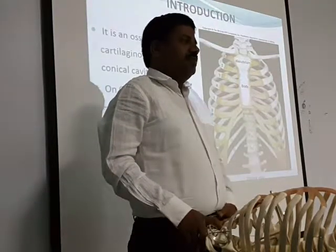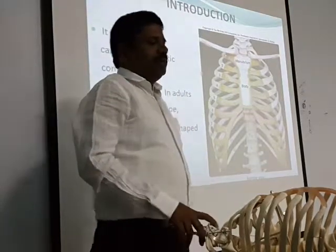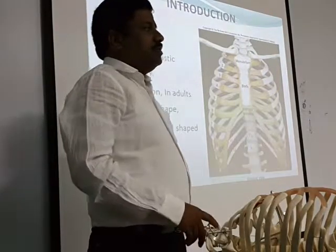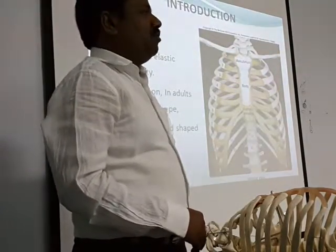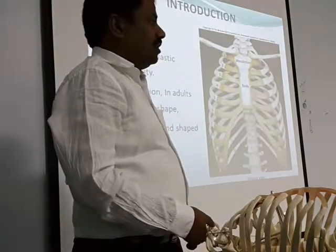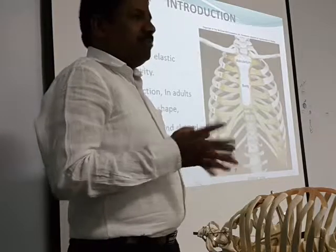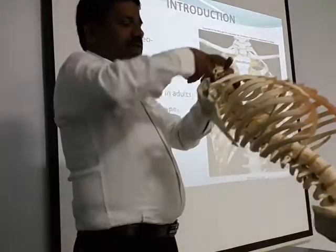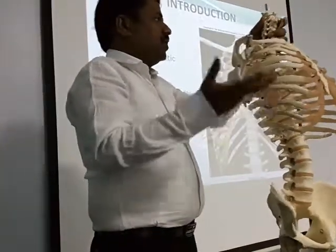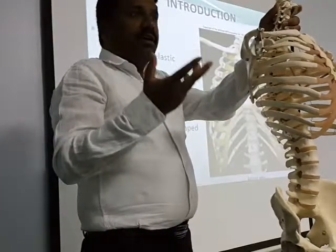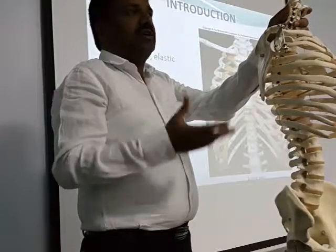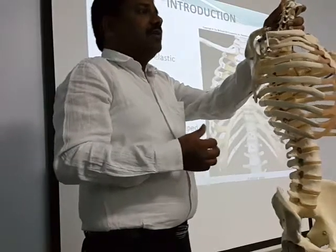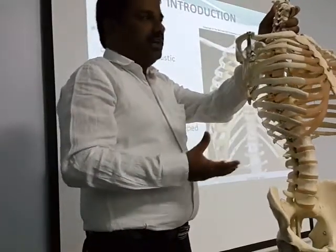The mechanics or movements of respiration involve the thoracic wall. It is osteocartilaginous, meaning made up of both bone and cartilage, making it slightly elastic. Looking at the thoracic cage, which is conical in shape, it contains organs like the lungs, great vessels, oesophagus, and heart. The thoracic cage or wall protects all those organs inside.